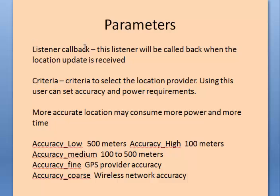The listener callback is the callback function that is invoked whenever there is a location change. Criteria can also be specified while requesting a location update — this includes the accuracy of location and how much power it should consume. If you specify accuracy as 10 meters, the mobile will choose GPS provider. If you specify accuracy as 100 meters or more, it will choose the network provider. Accuracy low is 500 meters, accuracy medium is 100 to 500 meters, and accuracy high is 100 meters.